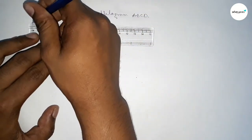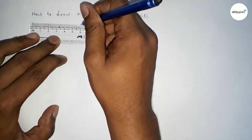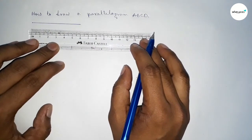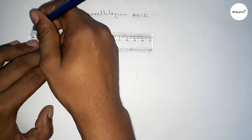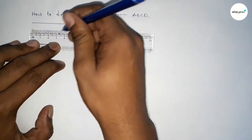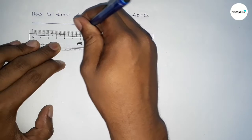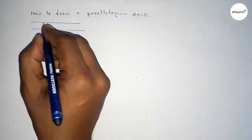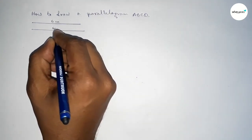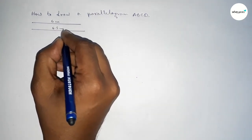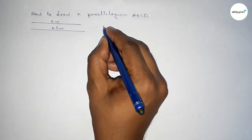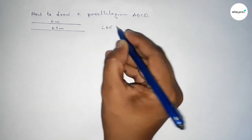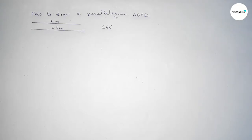First, drawing a line of length 6 centimeters, then drawing another line of length 6.5 centimeters. You can take any length. So this one is 6 centimeters and this one is 6.5 centimeters, and we are taking an angle of 60 degrees.